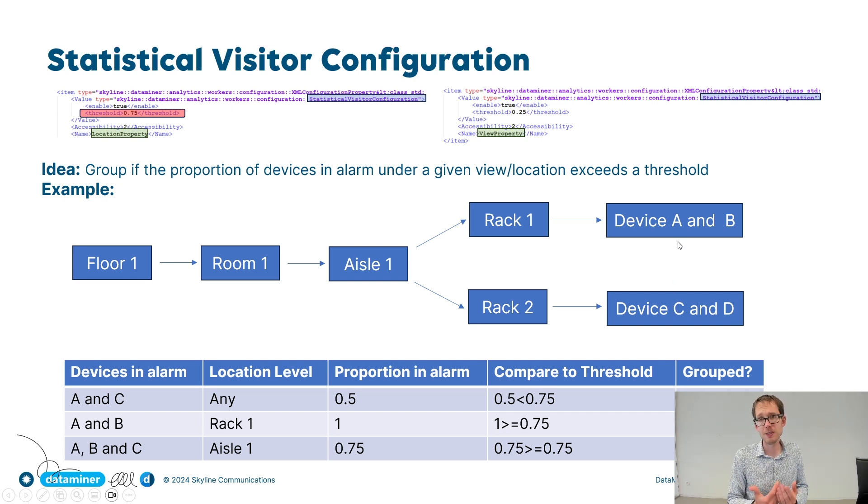Now assume first that A and C are in alarm. In that case, 50% of your devices are in alarm. But 50% is less than the configured 75%. So in this case, we will not group the alarms. On the other hand, what if there are alarms on A and B? Well, A and B both belong to rack one. So basically 100% of the devices in rack one have alarms. Now 100% is more than 75%. So yes, we will group those alarms.